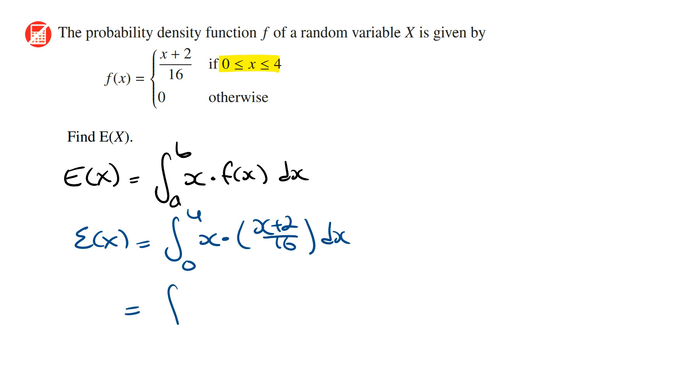Simplifying this, this is going to be the integral from 0 to 4 of x squared plus 2x on 16 dx. We can take out 1 on 16 since this is a constant, and write this as 1 on 16 times the integral from 0 to 4 of x squared plus 2x dx.